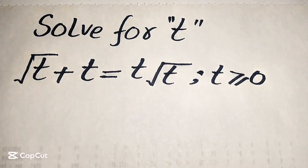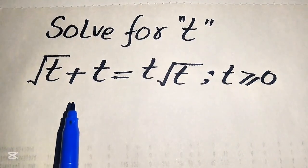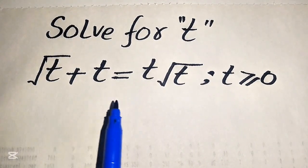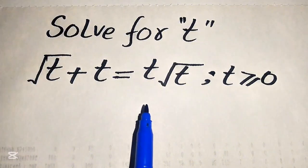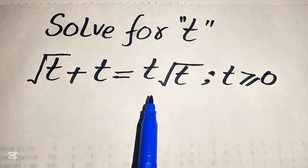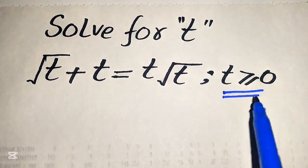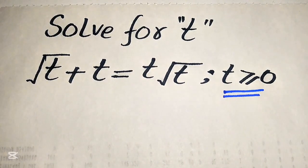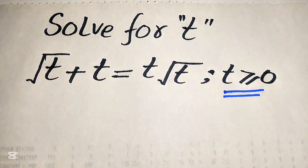Hello everyone, today I want to show you how to solve this problem for the values of t: the square root of t plus t equals t times the square root of t. We solve this problem for the values of t, but remember that t must be a positive number, or greater than or equal to zero.